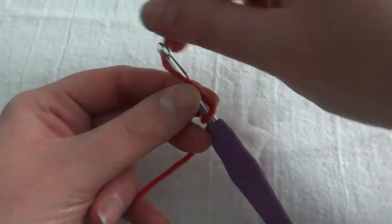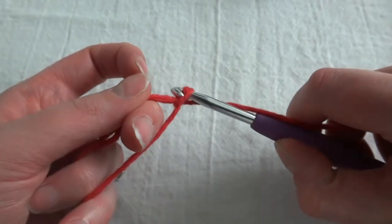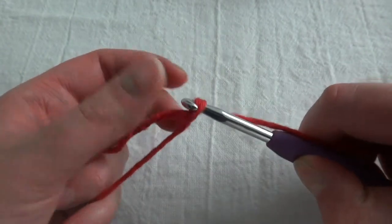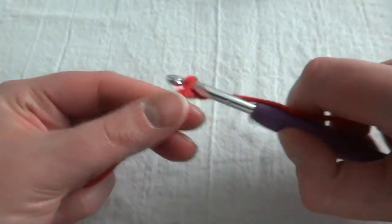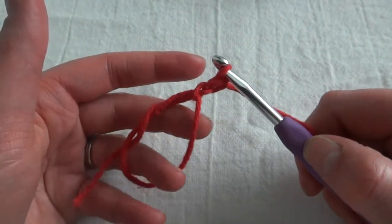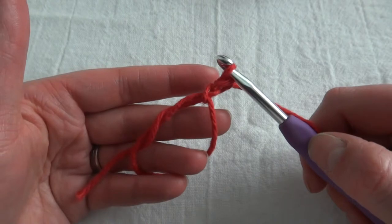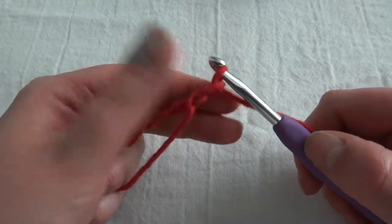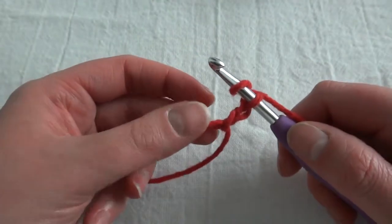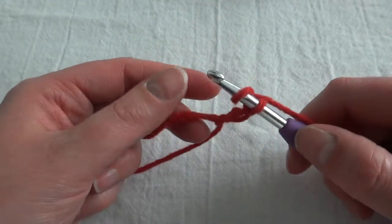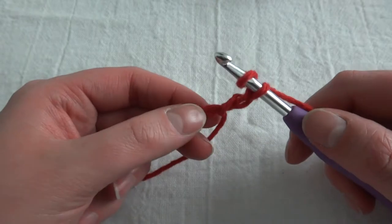And so from here you can just start chaining like you would start a regular round or row. So I'm going to chain two for double crochets and this can count as our first stitch. But again you can use the magic ring for any project with any stitch. So I'm starting with a chain two for double crochet but you could use it for a puff stitch or a single crochet. It's totally up to you.